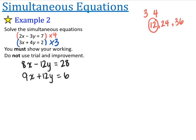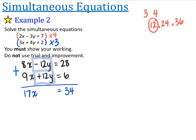So this time we've got 12y and 12y, but as you can see, one of them is a negative — negative 12y and positive 12y. Because those are alternate signs, I'm going to add the two equations together. So 8x plus 9x is 17x, and 28 plus 6 is 34. So 17x equals 34. We divide both sides by 17 and we end up with x is equal to 2. There is our first answer: x is equal to 2.